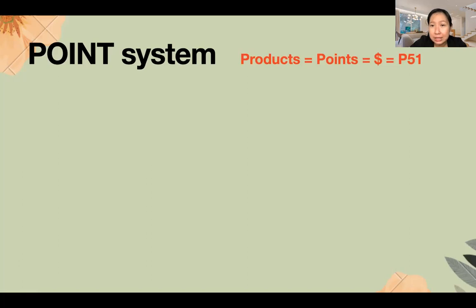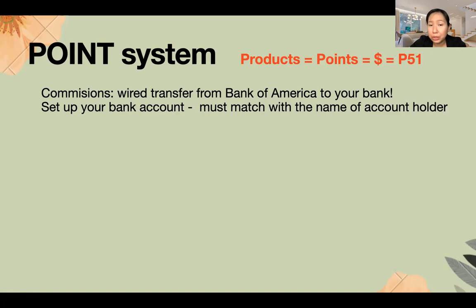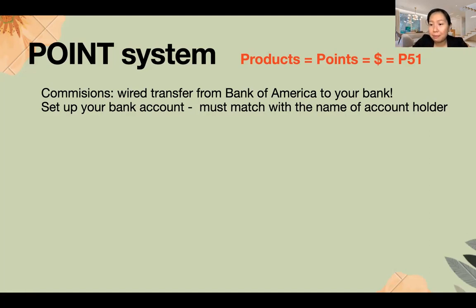Remember: every product has equivalent points, and from those points you earn income in dollars, and every dollar is equivalent to 51 pesos — our fixed rate for this year. This rate changes every year on January 1, when USANA updates the conversion for the whole year. All our commissions are wire-transferred from Bank of America to your bank, so make sure a bank account was set up during enrollment. If not, email USANA with proof of your bank account — a photo of your passbook or card — so they can update the system.